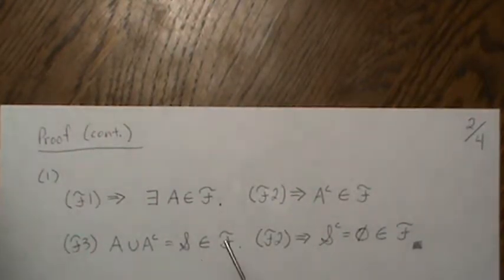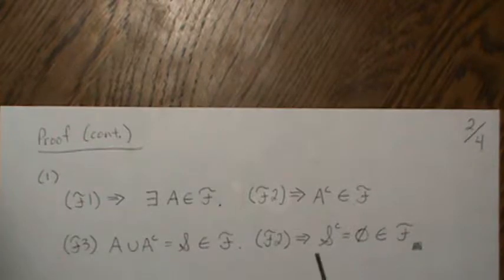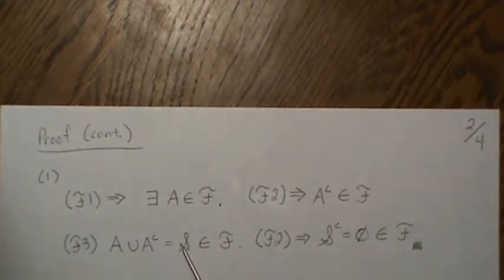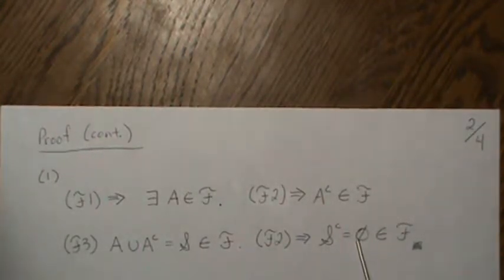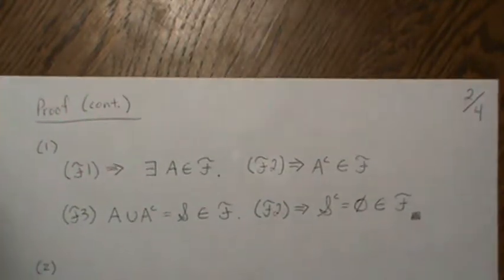It turns out that the smallest possible field is a set with just two elements: the entire sample space and the empty set. It's called the trivial field, which we'll talk more about in a moment.